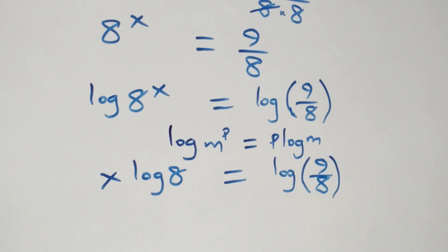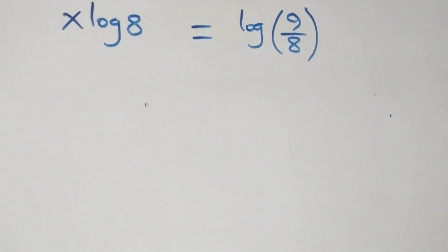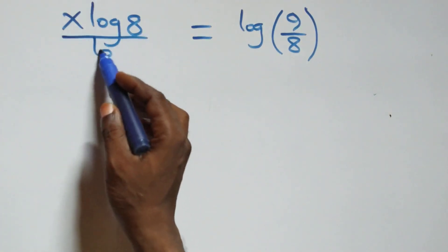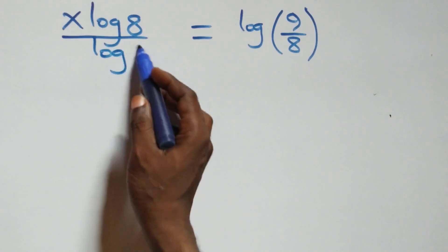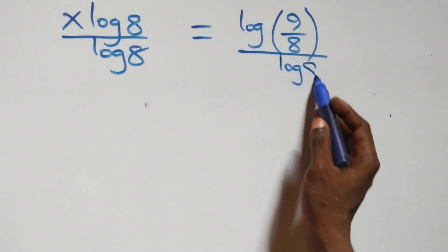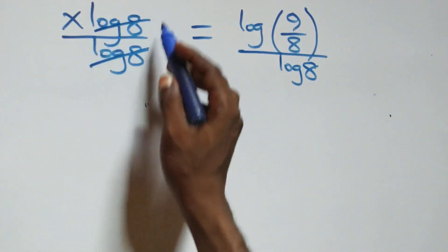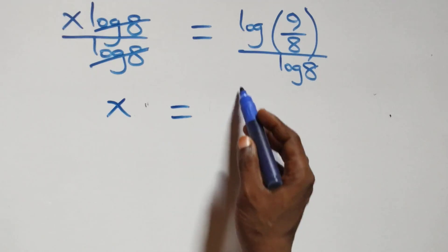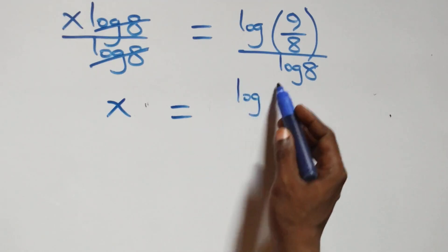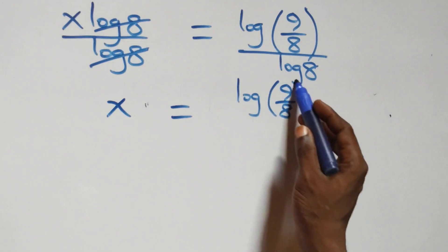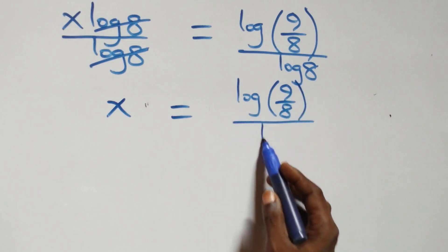Then what we have here becomes x times log 8 equals log of 9 over 8. From here, we divide both sides by log 8 — divide this side by log 8 and also divide this side by log 8 — which implies log 8 cancels and we have x left, which is equal to log(9/8) divided by log 8.